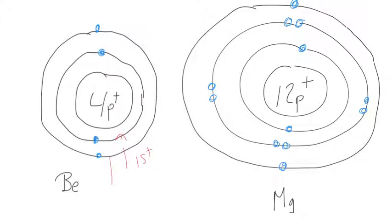Whereas magnesium, it was in period three, so it had three shells, the inner shell the first, the middle shell the second, and the outer shell the third.